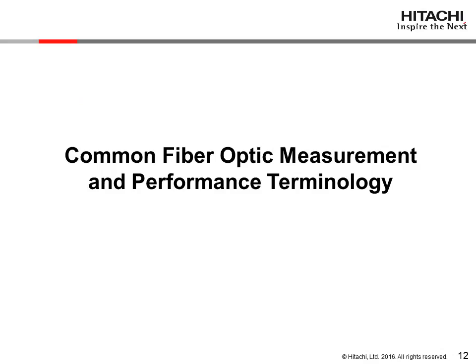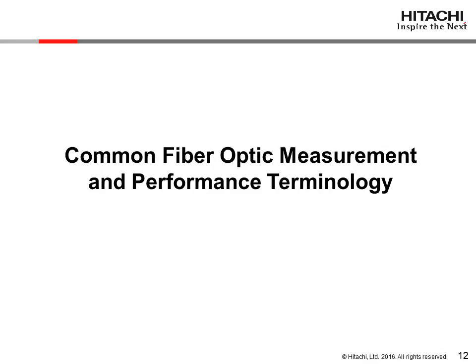The next five slides will familiarize you with the most common fiber optic standard measurement and performance terminology. Both multimode and single-mode optical fibers are characterized by the term attenuation or power loss. Attenuation is a reduction of optical power, signal strength, between two points measured in decibels. Fiber attenuation is normally measured per unit length in decibels per kilometer. The measured decrease in signal strength along a fiber optic waveguide is primarily caused by absorption and scattering of the light wave.